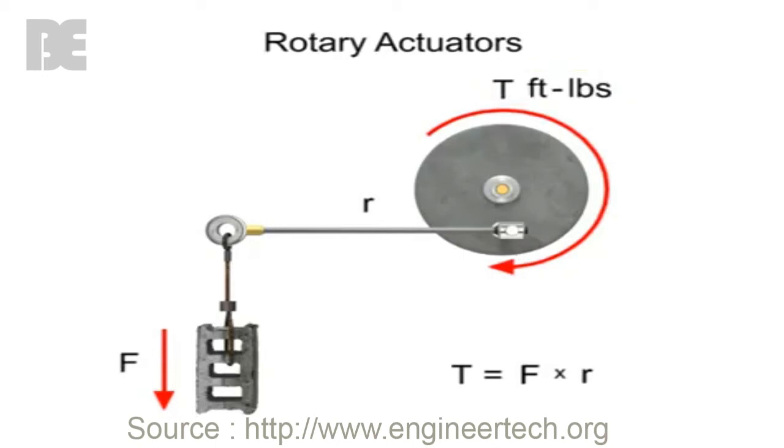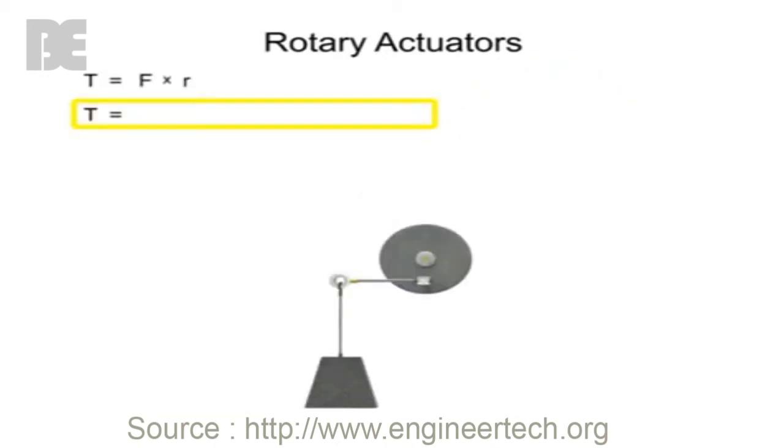For example, if a rotary actuator with an arm length or radius of two feet were used to lift a 200 pound weight, then the resultant torque required to accomplish the work would be 400 foot pounds.